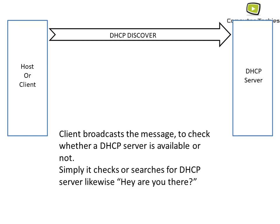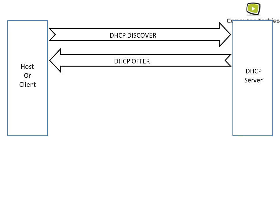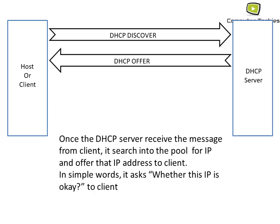After the Discover, the next step is the DHCP Offer. As the name suggests, it is the act of offering something from the DHCP server to the host. Once the DHCP server receives the message from the client, it searches its pool for an IP address and offers a particular IP address to the client. In simple terms, the DHCP server asks the client, 'Is this IP address okay for you?'